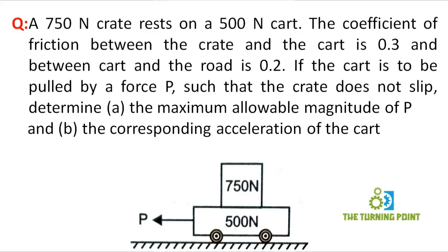A 750N crate rests on a 500N cart. The coefficient of friction between the crate and cart is 0.3, and between the cart and the ground is 0.2. If the cart is to be pulled by a force P such that the crate doesn't slip, determine the maximum allowable magnitude of P and the corresponding acceleration of the cart.